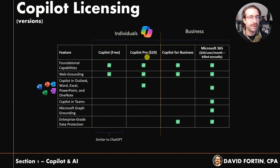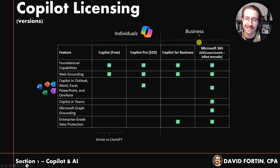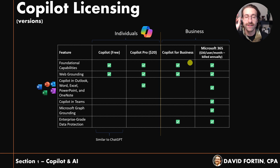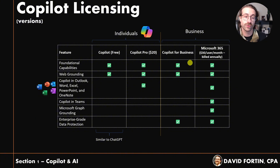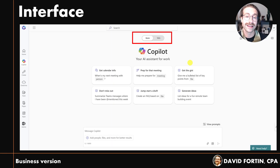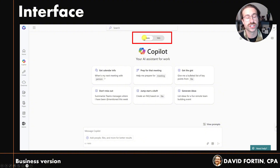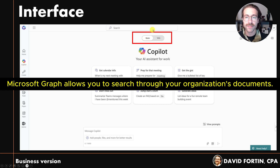Where we really care is Copilot for Business on the right. If you have a business email and you log into copilot.microsoft.com with your business email, it's going to look like that, except you won't have the two tabs at the top to switch between Work — which is the Microsoft Graph — and Web. This is the main difference: if you don't pay, you won't see that.